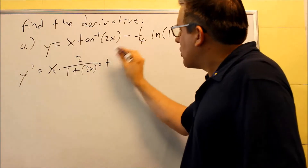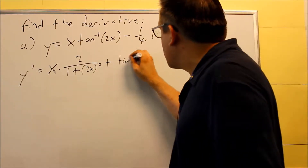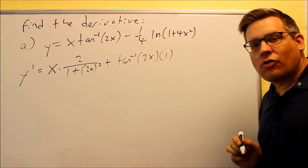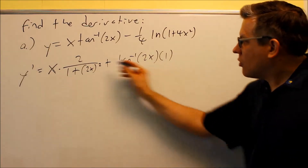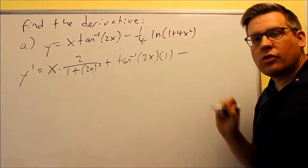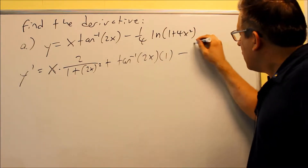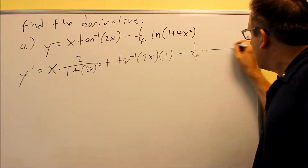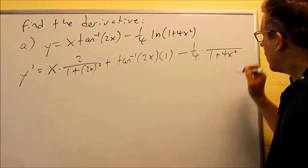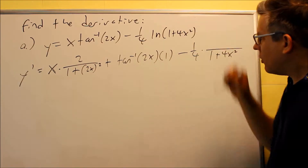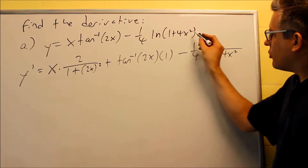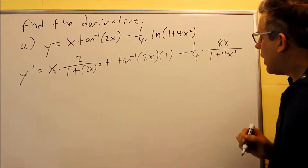Plus the second part of the product rule: the second thing is inverse tangent of 2x, times the derivative of the first, which is 1. So this whole thing is the derivative of the first term. Then we have a minus, and now we take the derivative of this part. We have one-fourth, and we're going to use u prime over u. On the bottom is 1 plus 4x squared. On top is the derivative of the inside: the derivative of 1 is 0, 2 comes down, giving us 8x on top.